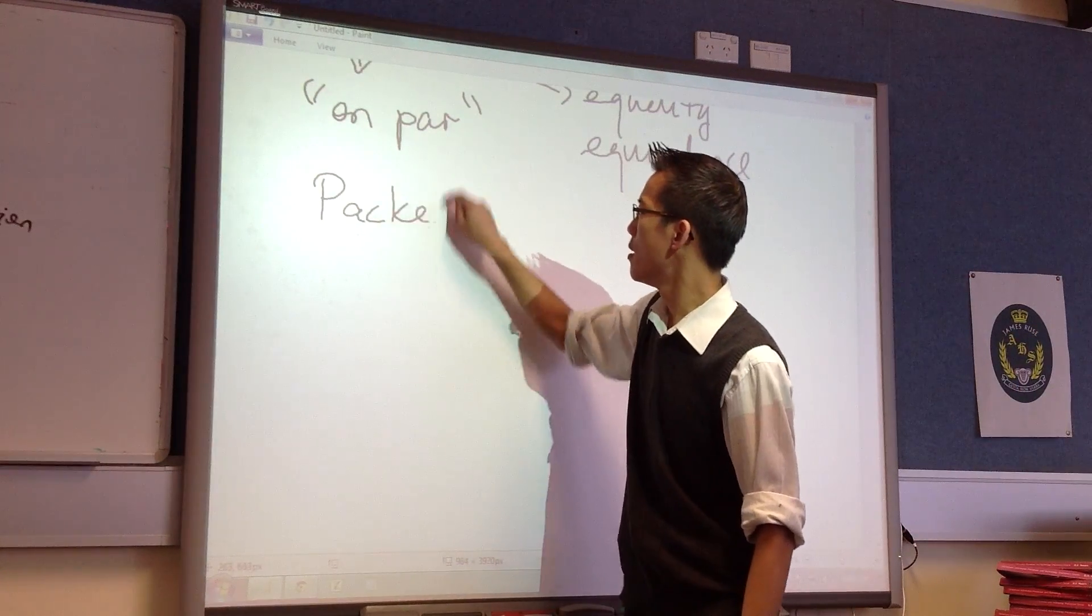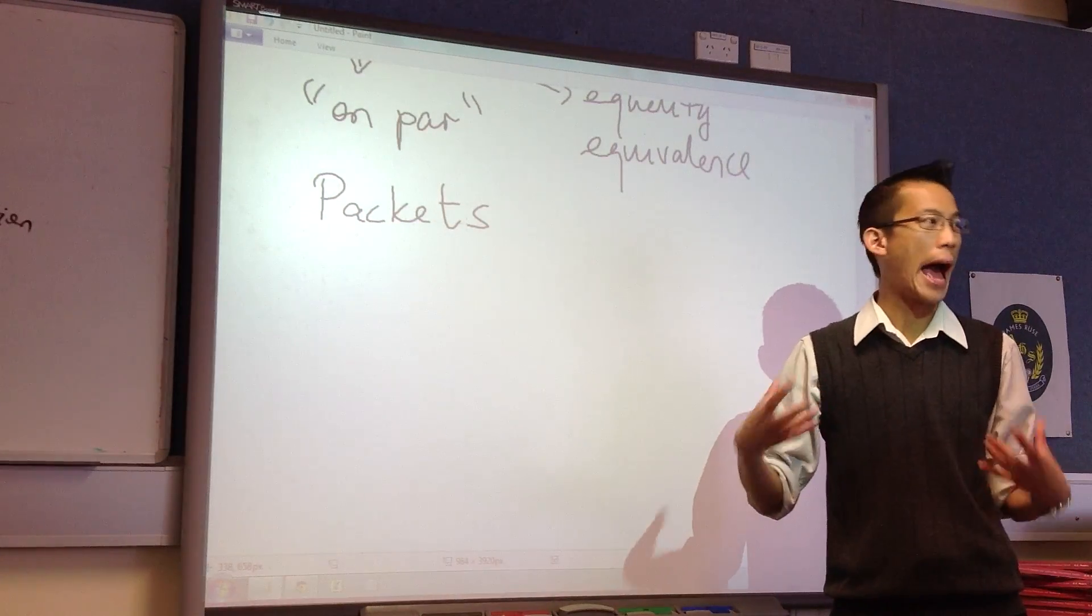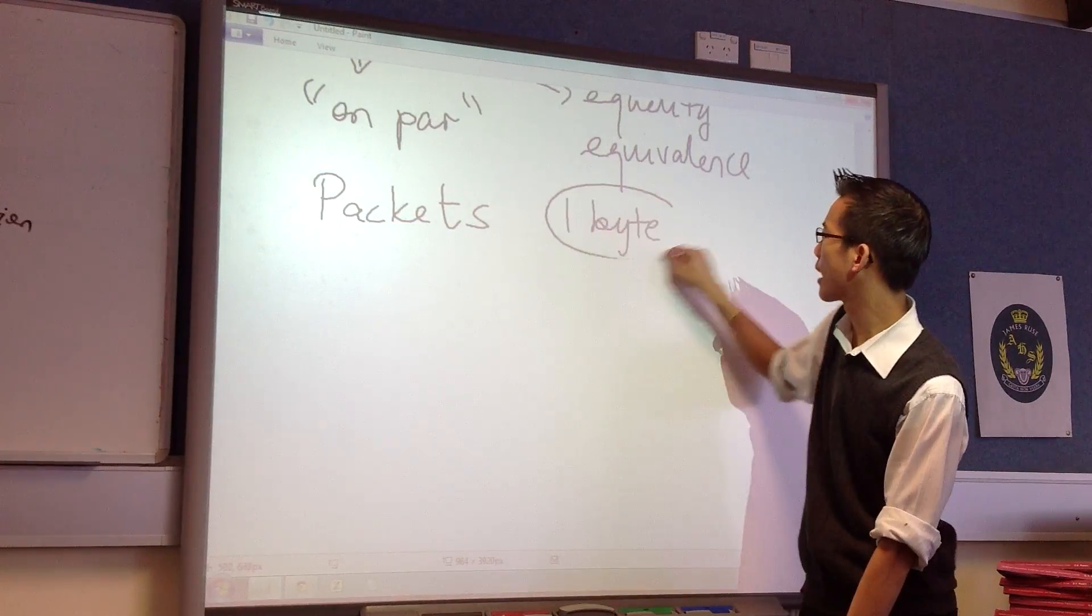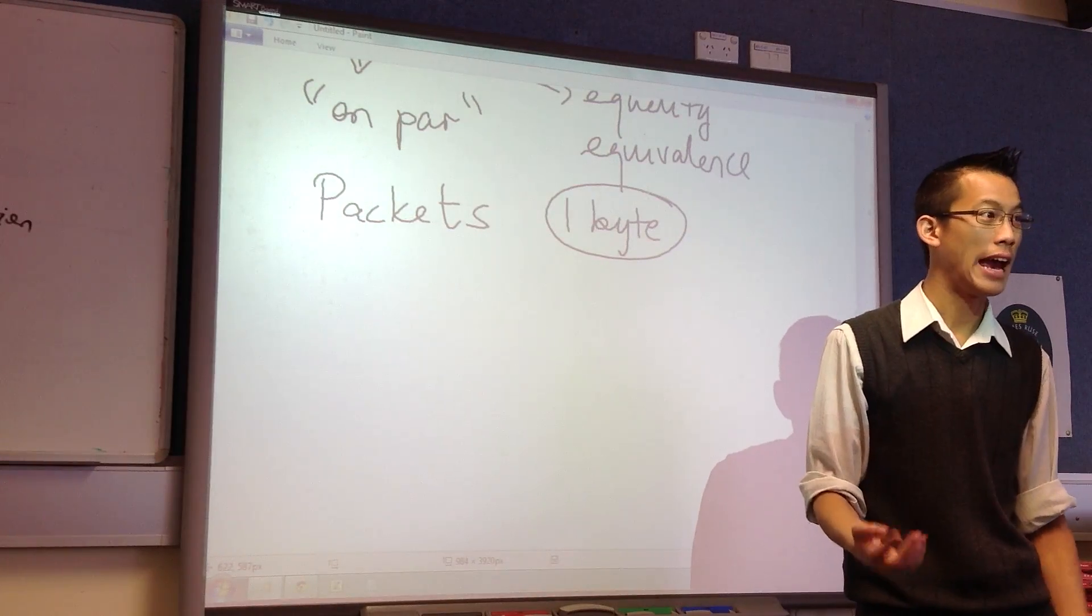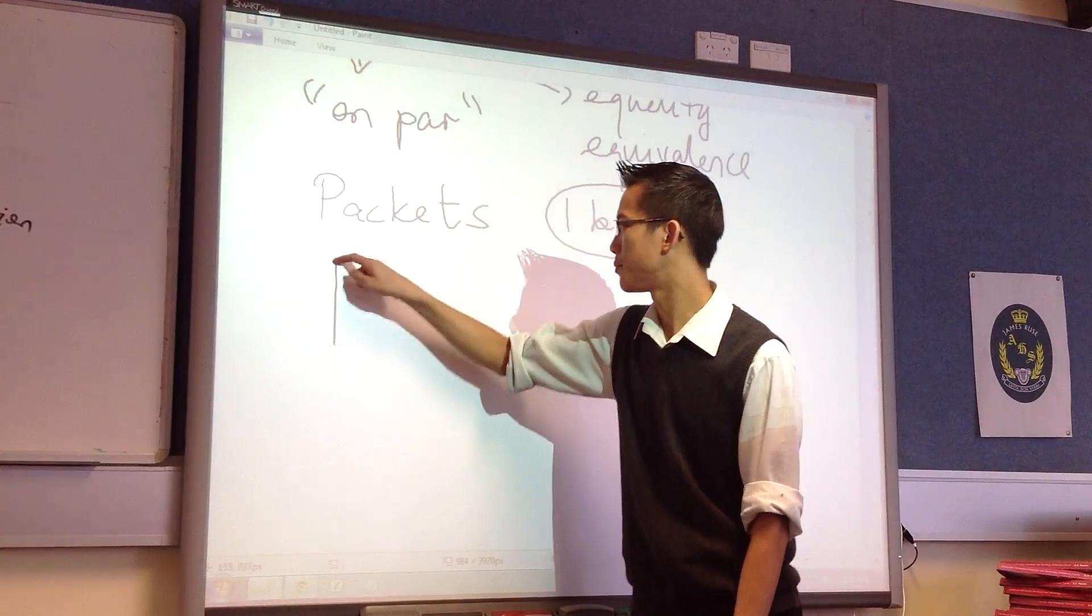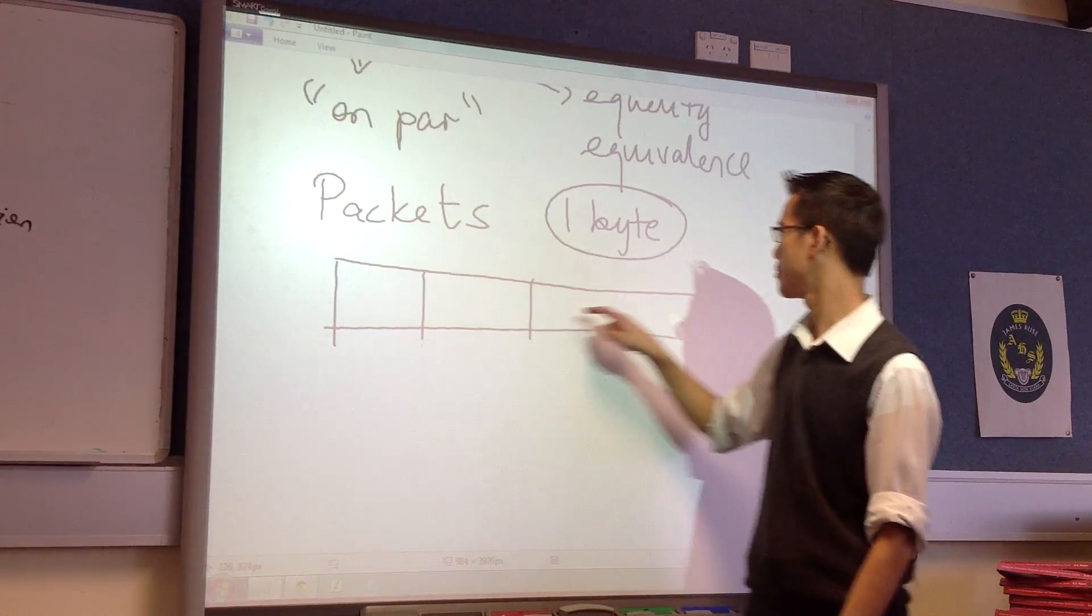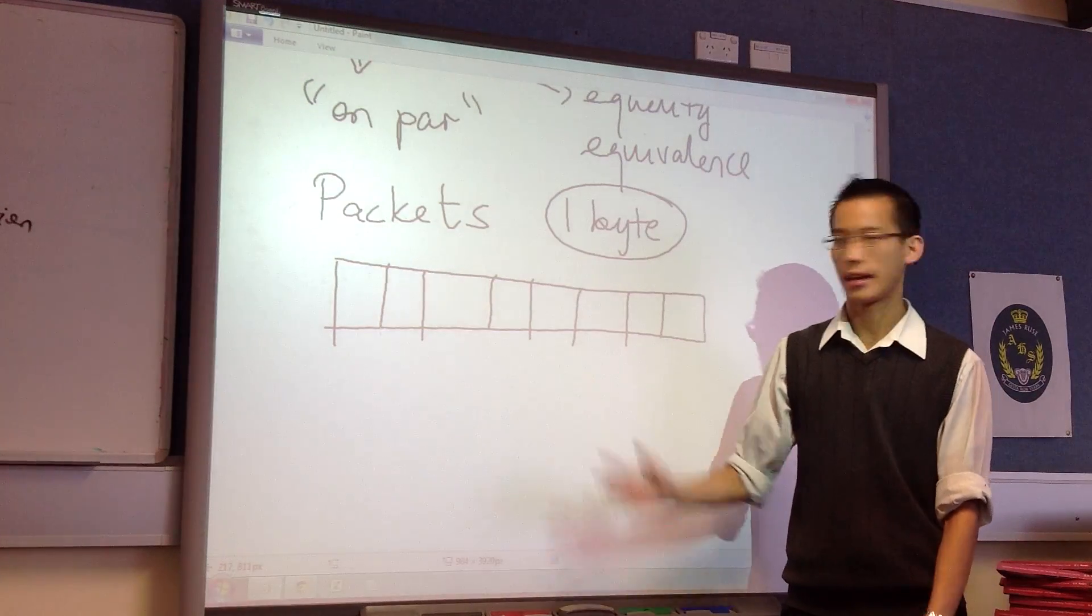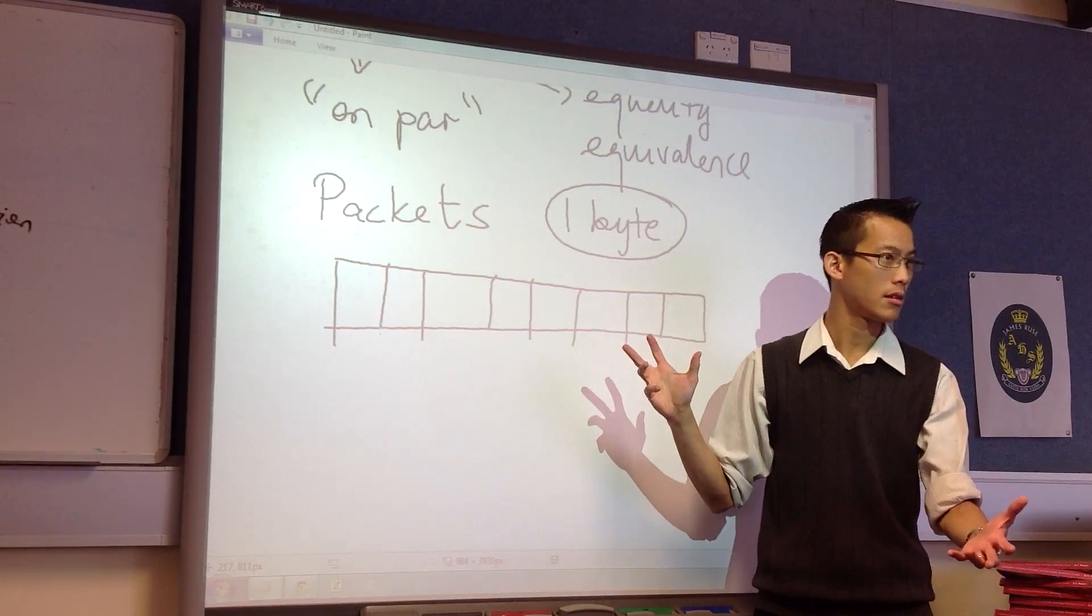Now, packets can vary in size. But one of the most common packet sizes is one byte. And one byte, as you know, is short for eight bits. Let's divide this up. So here's a byte, and it's got eight little spots, and they're bits, so I can put a zero or a one in any of these.